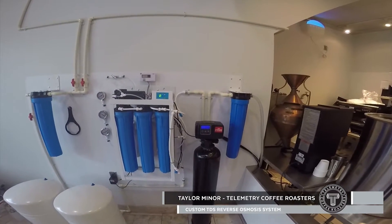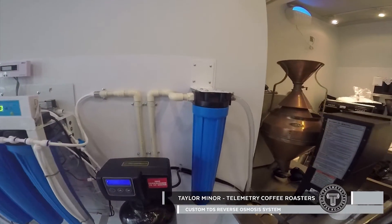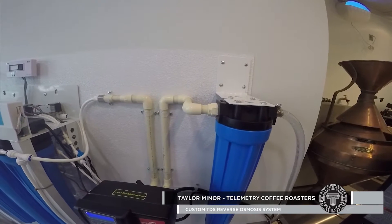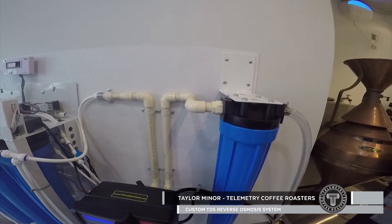We have first a pre-filter, this is 30 microns, to make sure no large debris gets into the softener.